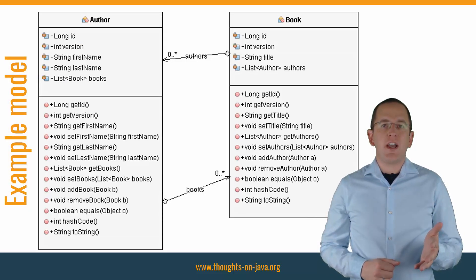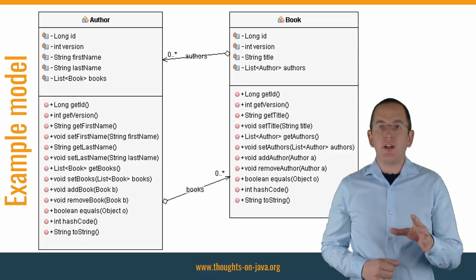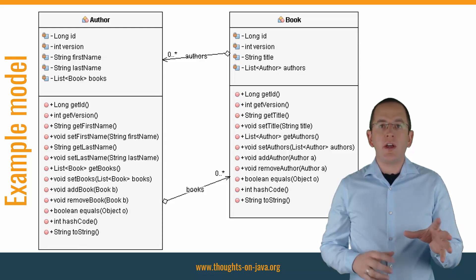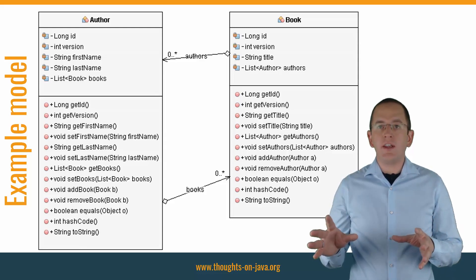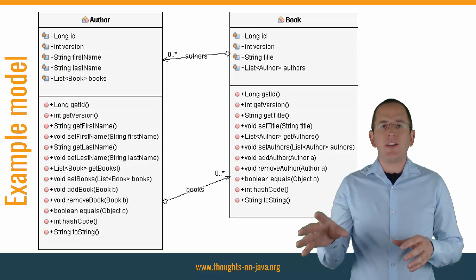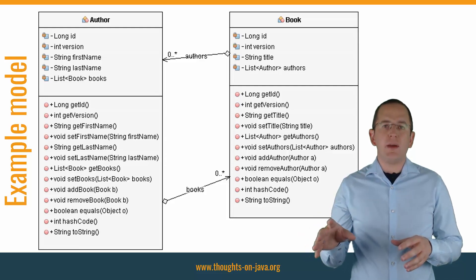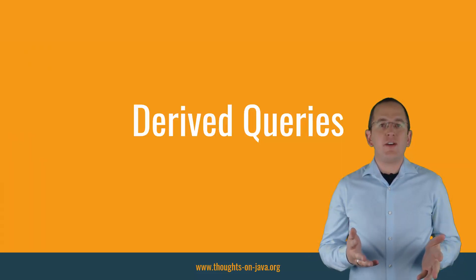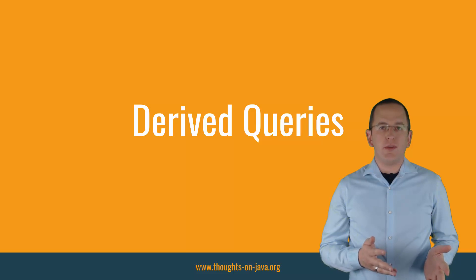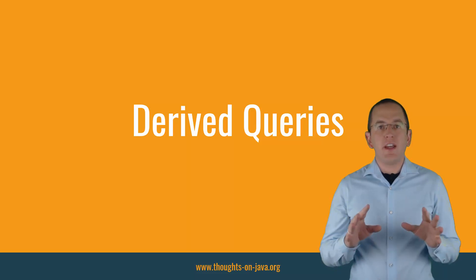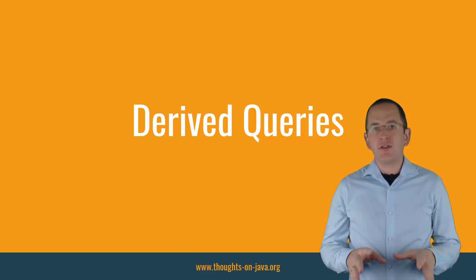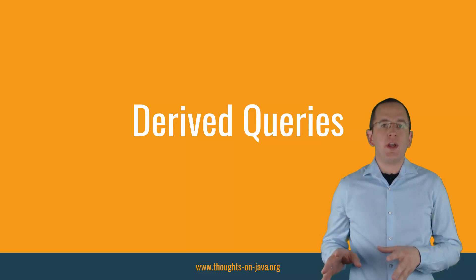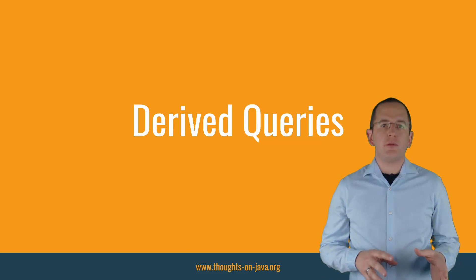Let's take a quick look at the domain model we will use in all of the examples. It consists of an Author and a Book entity with a many-to-many association between them. Spring Data often gets praised for its derived query feature — it makes the definition of a simple query extremely quick and comfortable.